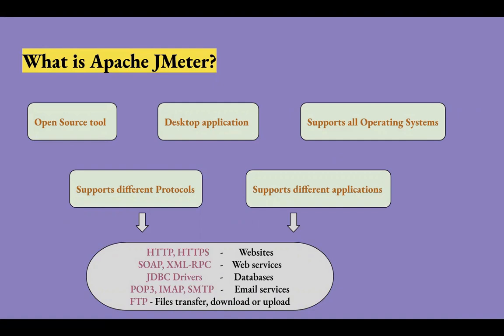Different types of protocols supported by JMeter are HTTP and HTTPS for websites, web services having protocols like SOAP or XML-RPC, database connections using JDBC drivers, POP3, IMAP, and SMTP for email services, and FTP services to transfer, upload, or download files. Earlier it was mainly used for web and FTP applications but now it is extended to database connections, web services, and supports other types of testing as well.